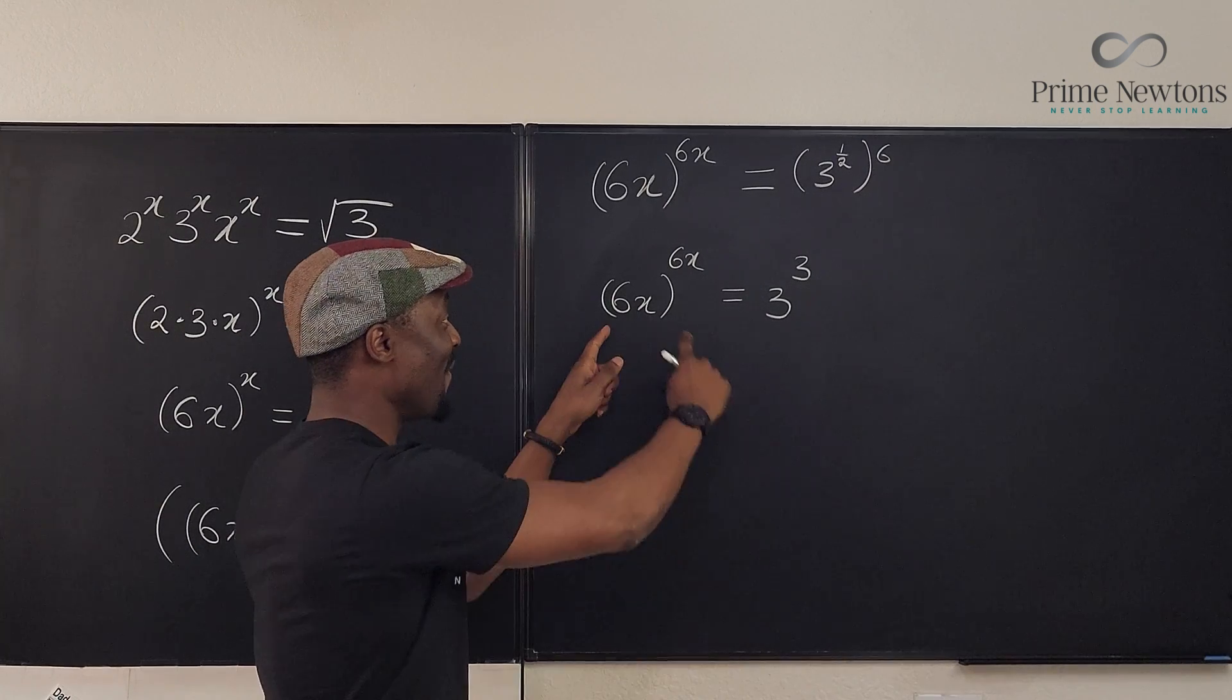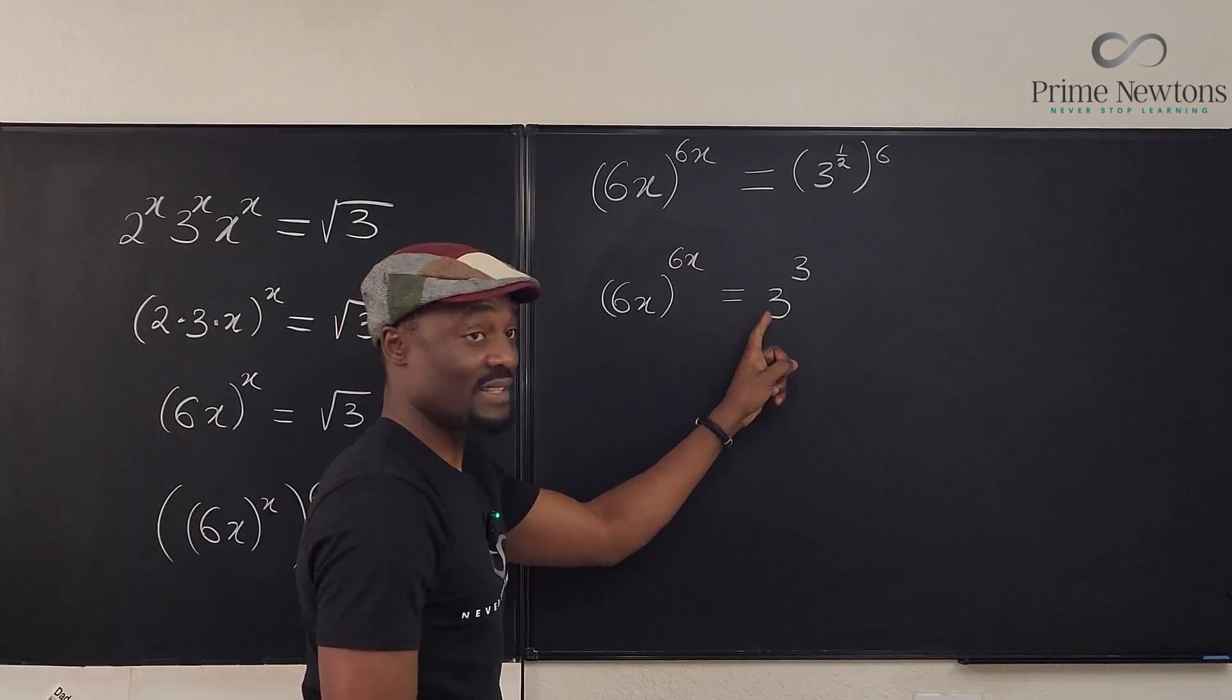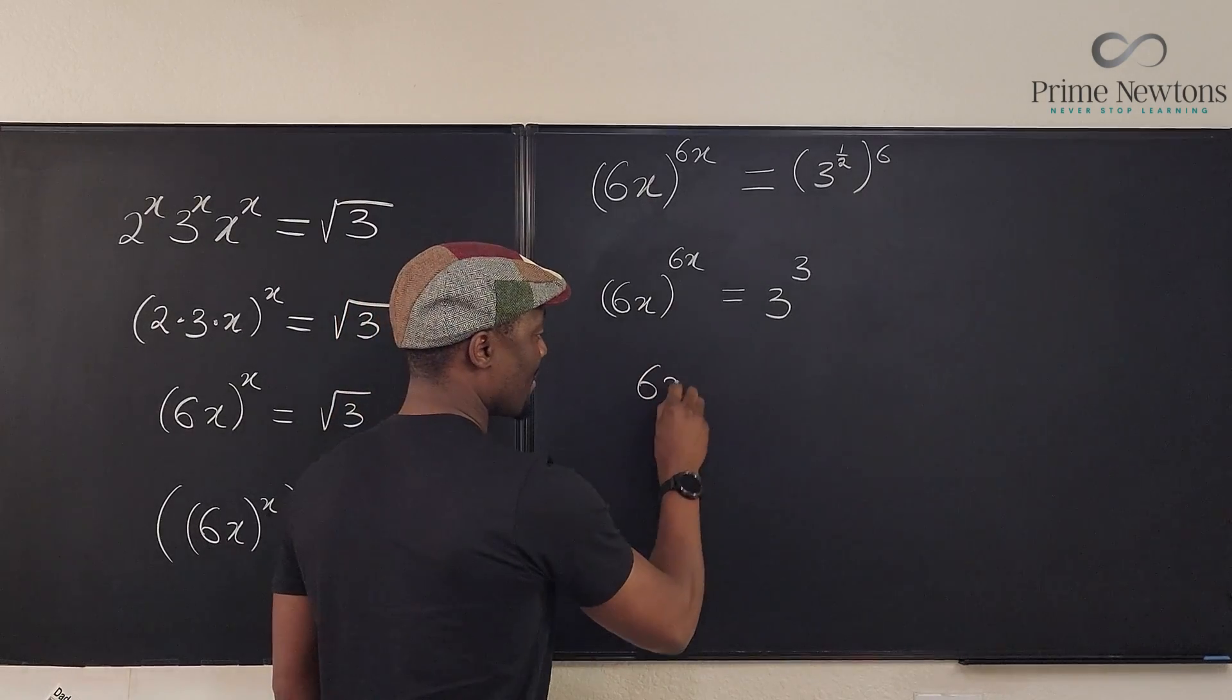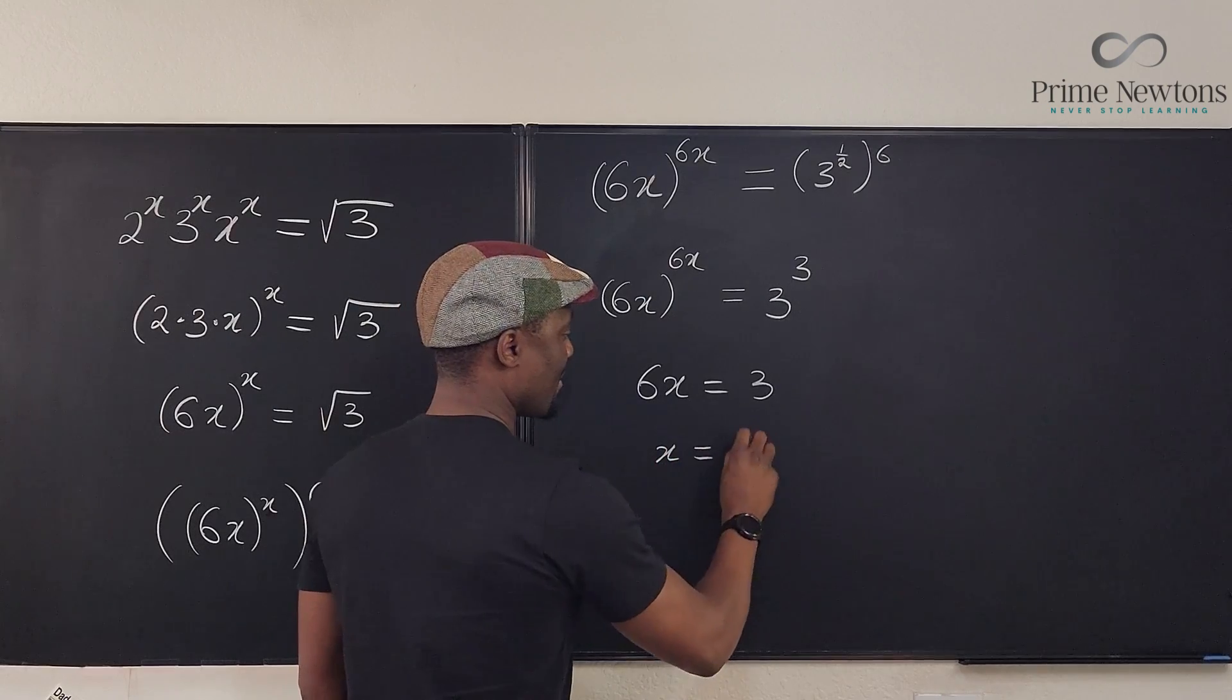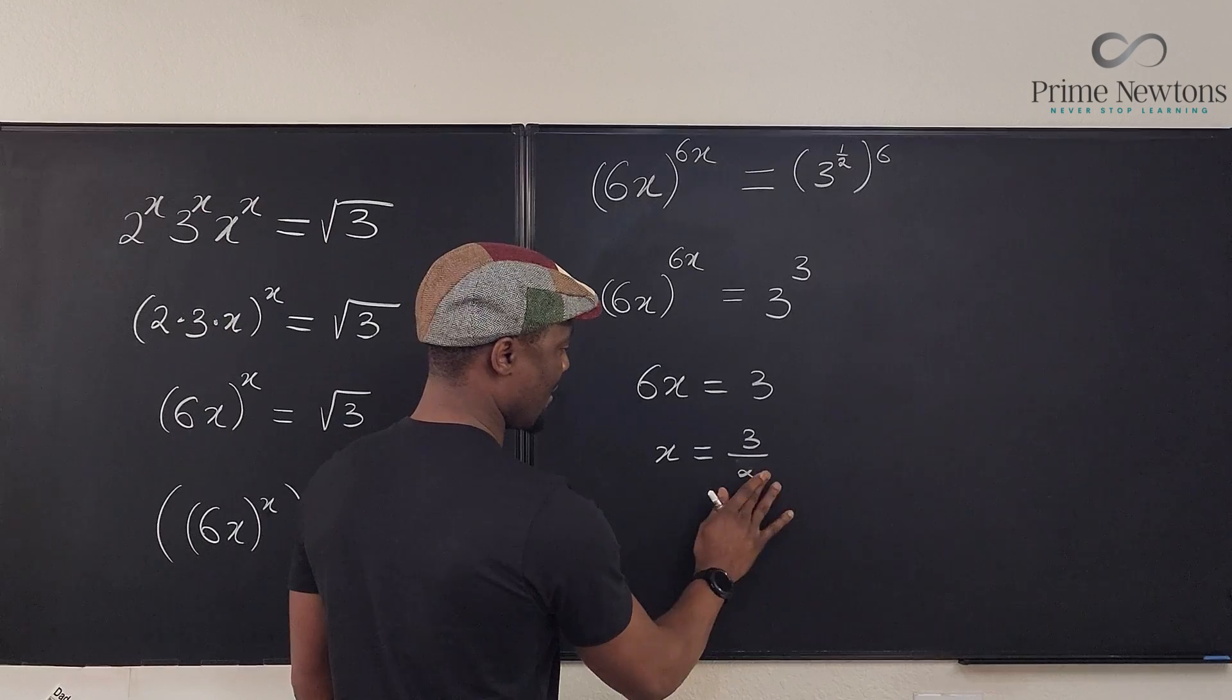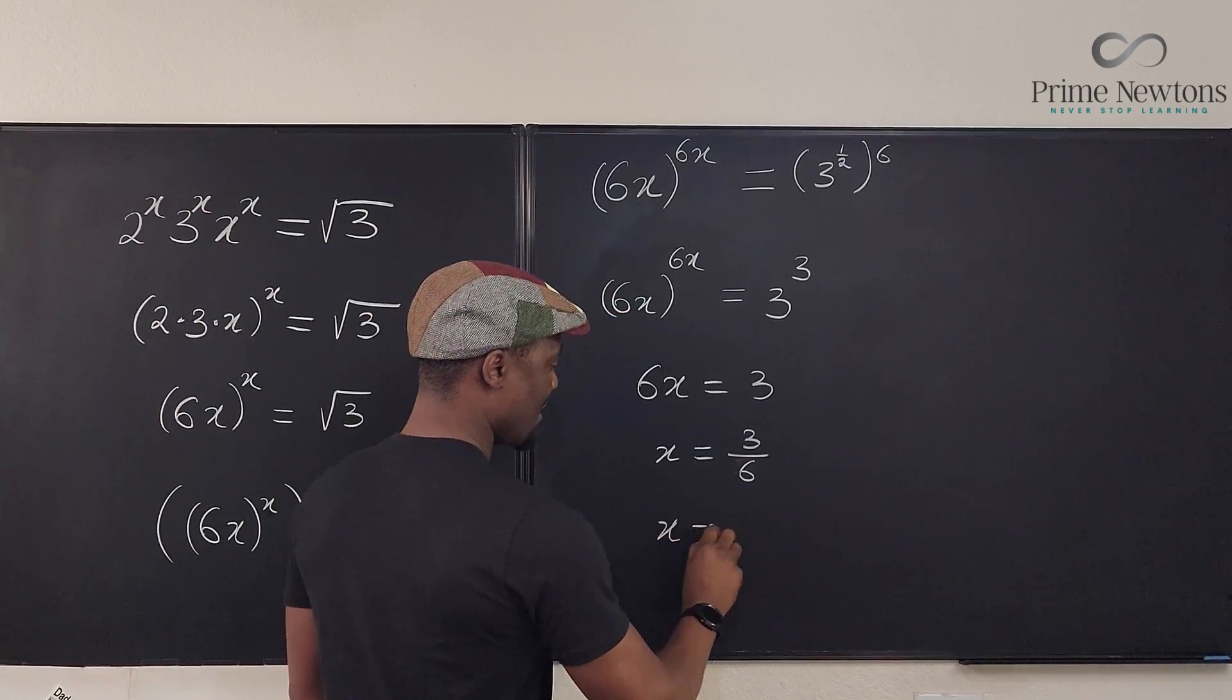That's it. So this raised to power this is the same thing as this raised to power this. That means 6x must be 3. x equals 3 over 6. And what's that? x equals 1 half.